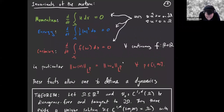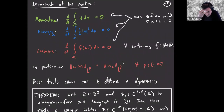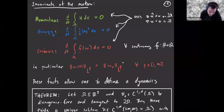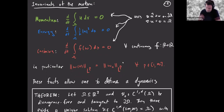There are some important conserved quantities known for the Euler equation. One is momentum — just the integral of the velocity over the domain. There's the energy and the Casimirs. The Casimirs are just any continuous function of the vorticity integrated over the domain, conserved in time. In particular, LP norms of the vorticity are preserved. That's a consequence of the fact that the vorticity is transported in the domain.